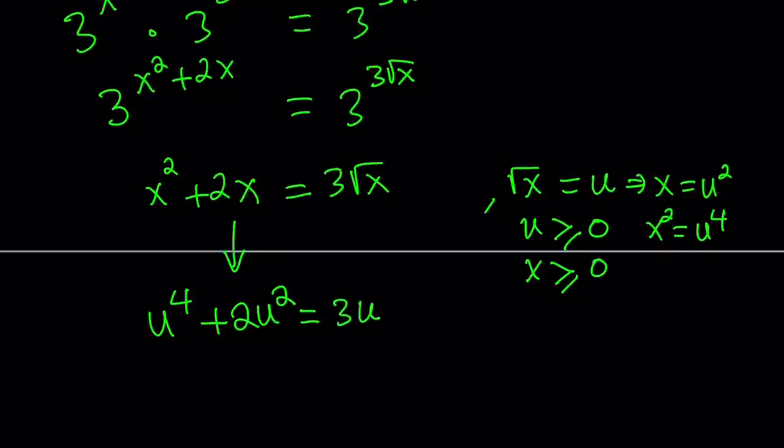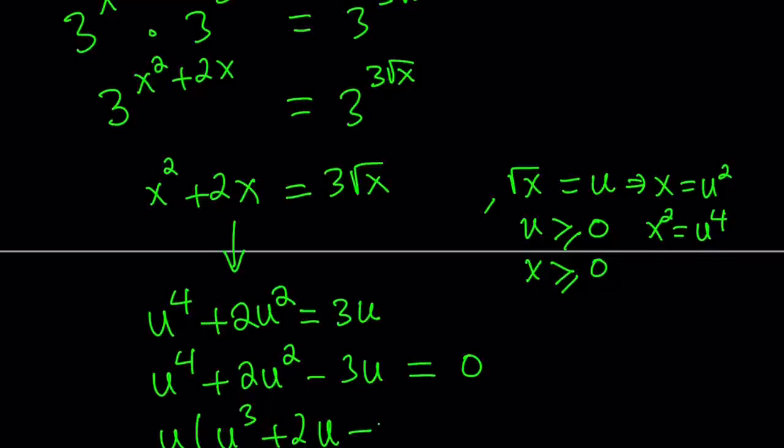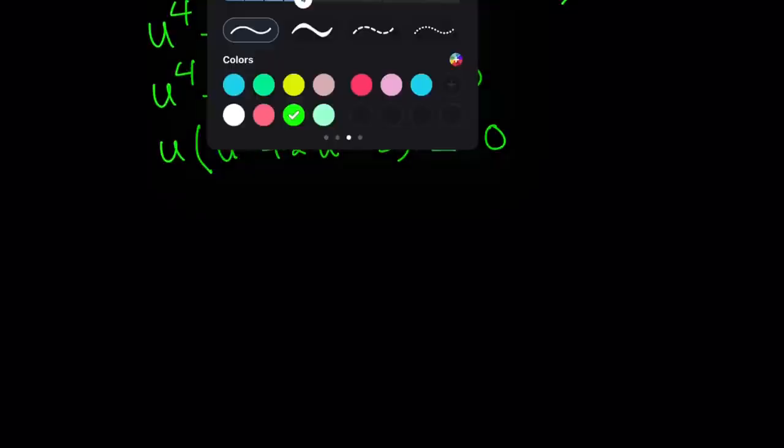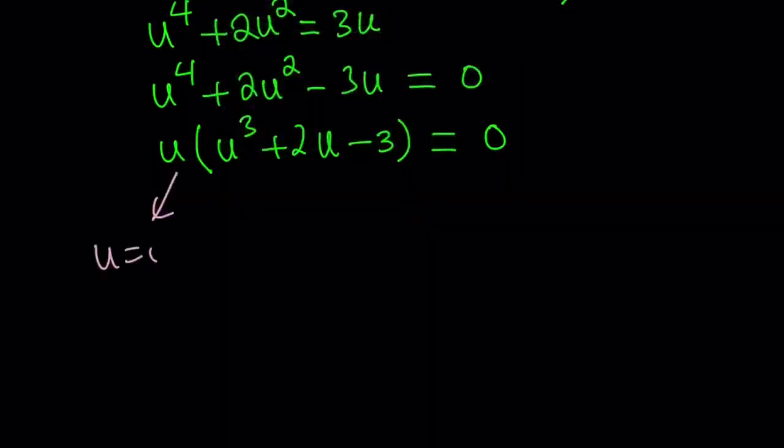We're going to put everything on the same side. When you're solving an equation, do not cancel out terms. Always put everything on the same side, set it equal to 0, and then factor. So that's what we're going to do next. We're going to factor this equation. Take out a u, and you end up with u cubed plus 2u minus 3 equals 0. So now we got an equation. It was a quartic but it's easily factorable. U equals 0 obviously is going to be a solution from here. U equals 0 works, but we're going to check that out.